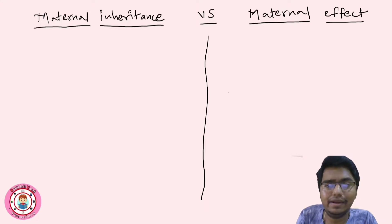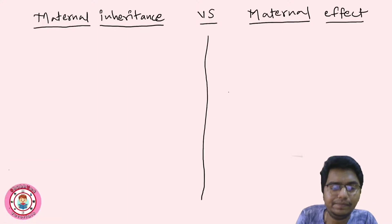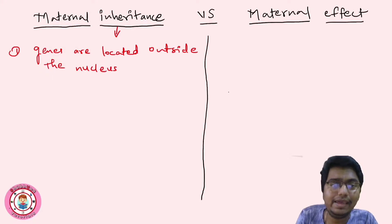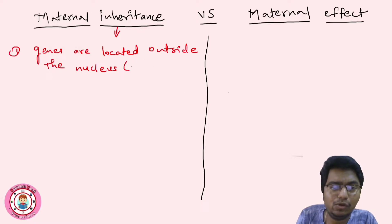In maternal inheritance, the first important point is about genes. From the word 'inheritance' itself, we understand that genes are located outside the nucleus. This is the key point — genes are located outside the nucleus, meaning they may be in the mitochondria or chloroplast.